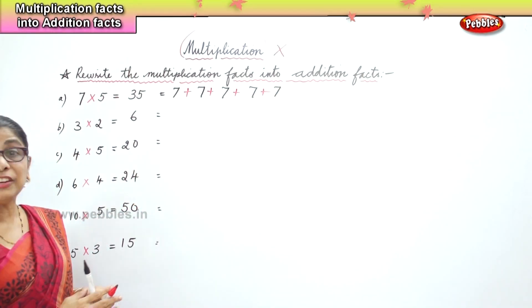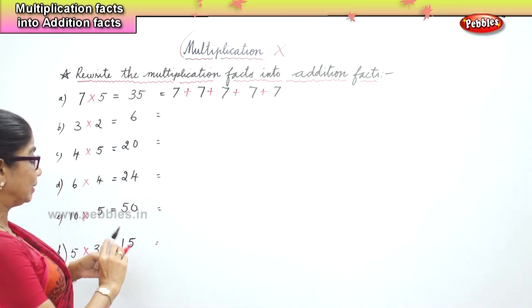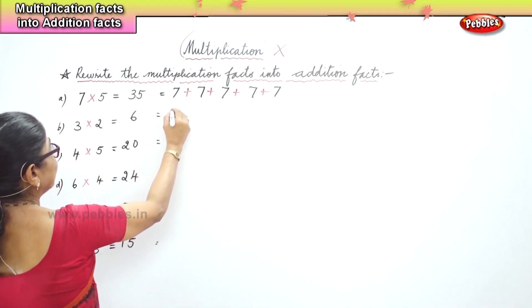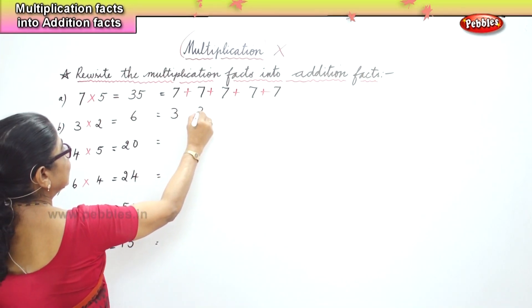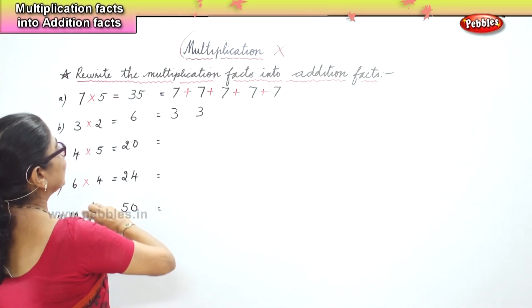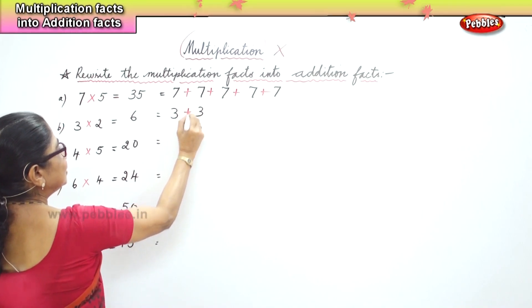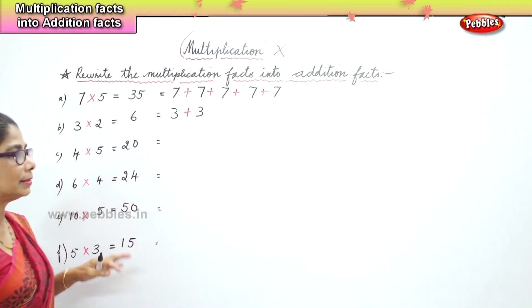Next, we have three twos are 6. Three, how many times? Two times. Three plus three is six.